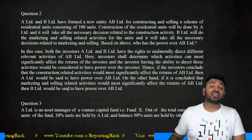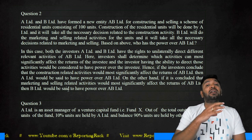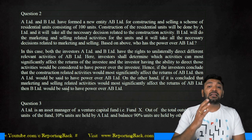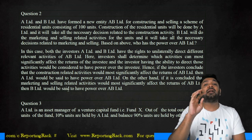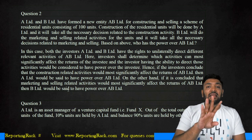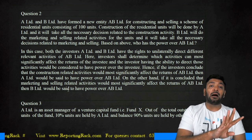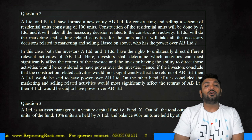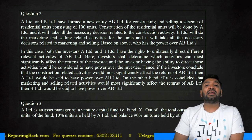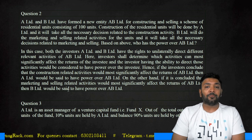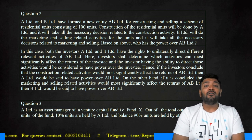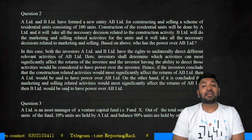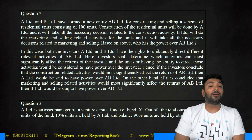If you believe that the construction activity is more significant, then A Limited will have power over the investee AB Limited. But if you say B Limited, which is doing marketing and selling, is more significant in activity, then B Limited will have power over AB Limited. With the given facts, either A or B could be considered to have control. Both A and B Limited have a right to unilaterally direct different relevant activities of AB Limited. The investor shall determine which activity will most significantly affect the returns of the investee.